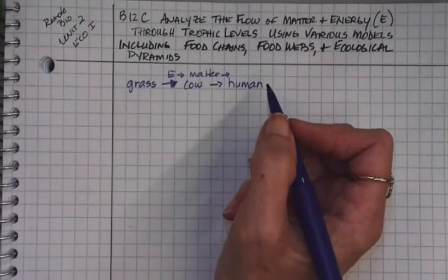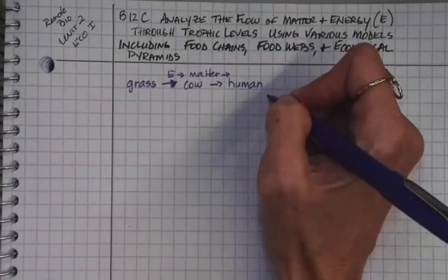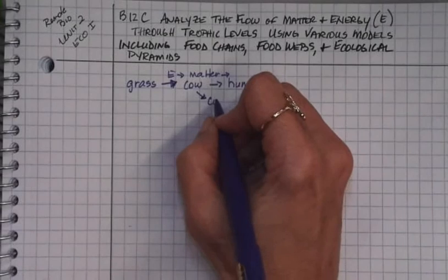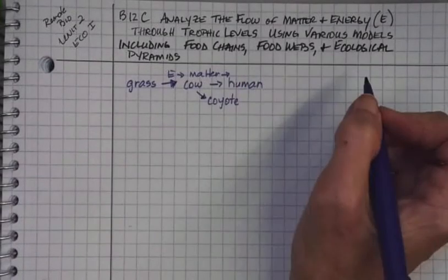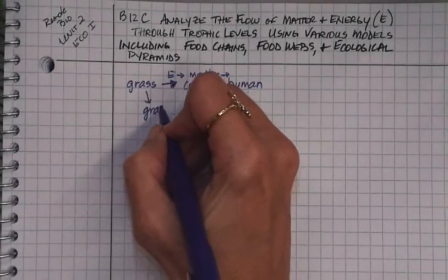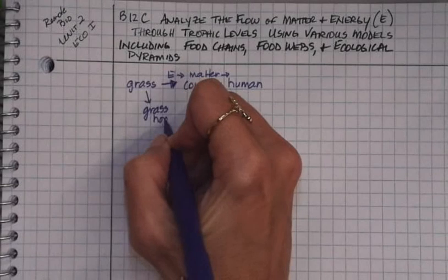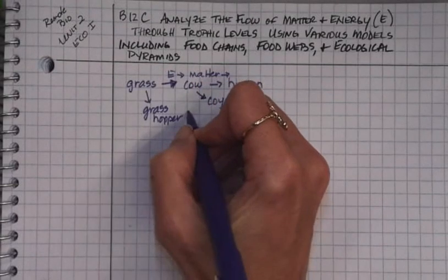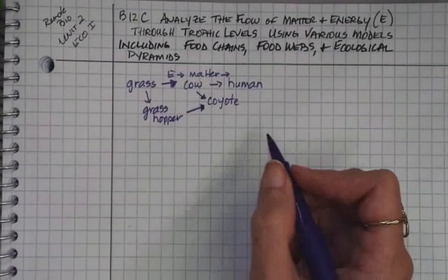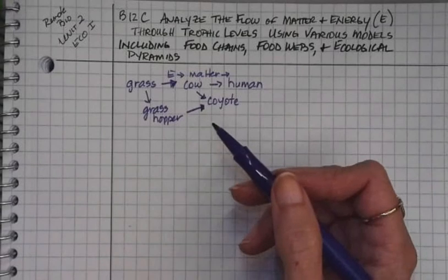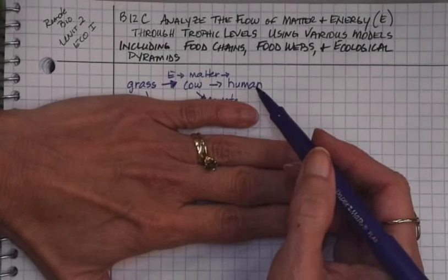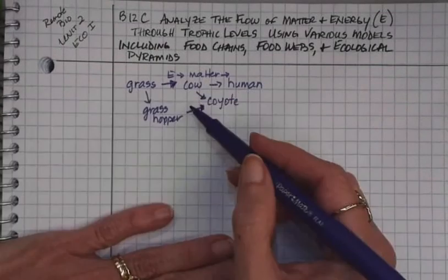When we have a food web, we add more things to it. Like, oh, well, what else can eat a cow? Well, if we get a coyote that's really lucky, maybe it's going to eat a calf, a young one. What else eats the grass? Well, grasshoppers do. But coyotes will also eat grasshoppers. That's what happens in real life. They eat lots of insects. So now what we have is something more realistic, and it involves multiple organisms. So if we just look at one, we have the food chain. It always points to the direction that the energy and matter are going. When we look at the other, we have a food web.